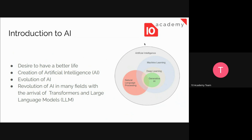Human beings are driven by a big desire to make or to have a better life. That is the same thing for computer scientists, and at some point they started thinking to create a branch called artificial intelligence that aims to create intelligent systems that will think like human beings and do things for us. Those intelligent systems will be able to learn, to reason, to act like a human being.